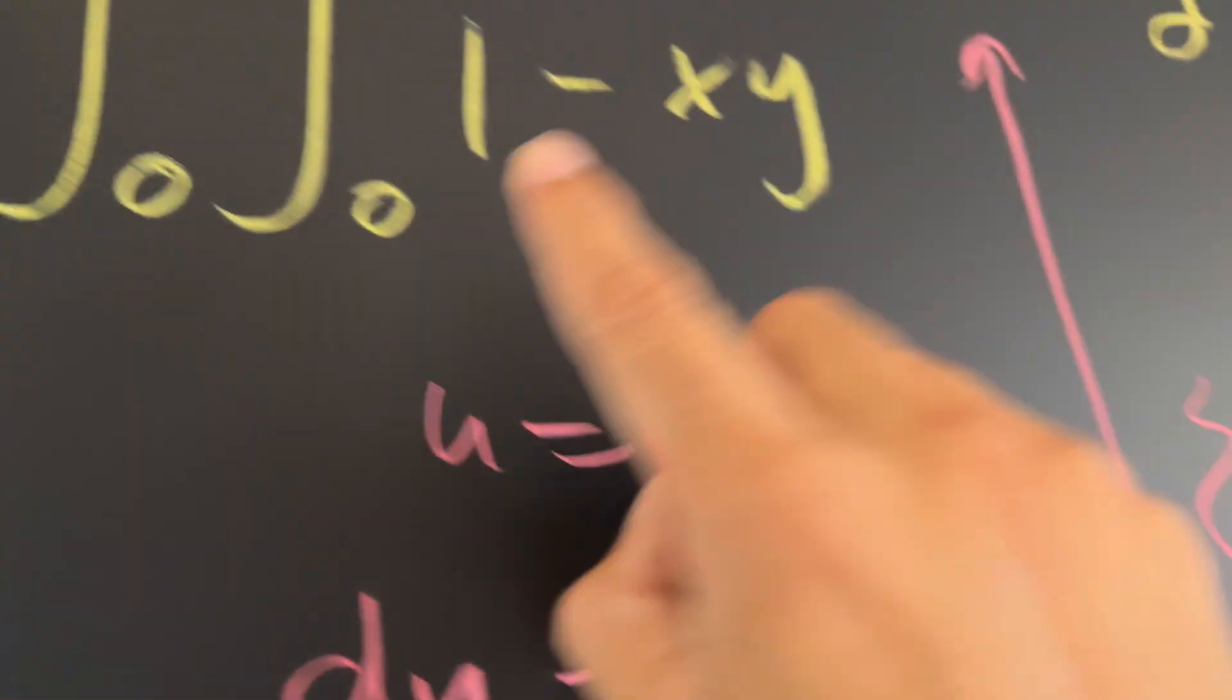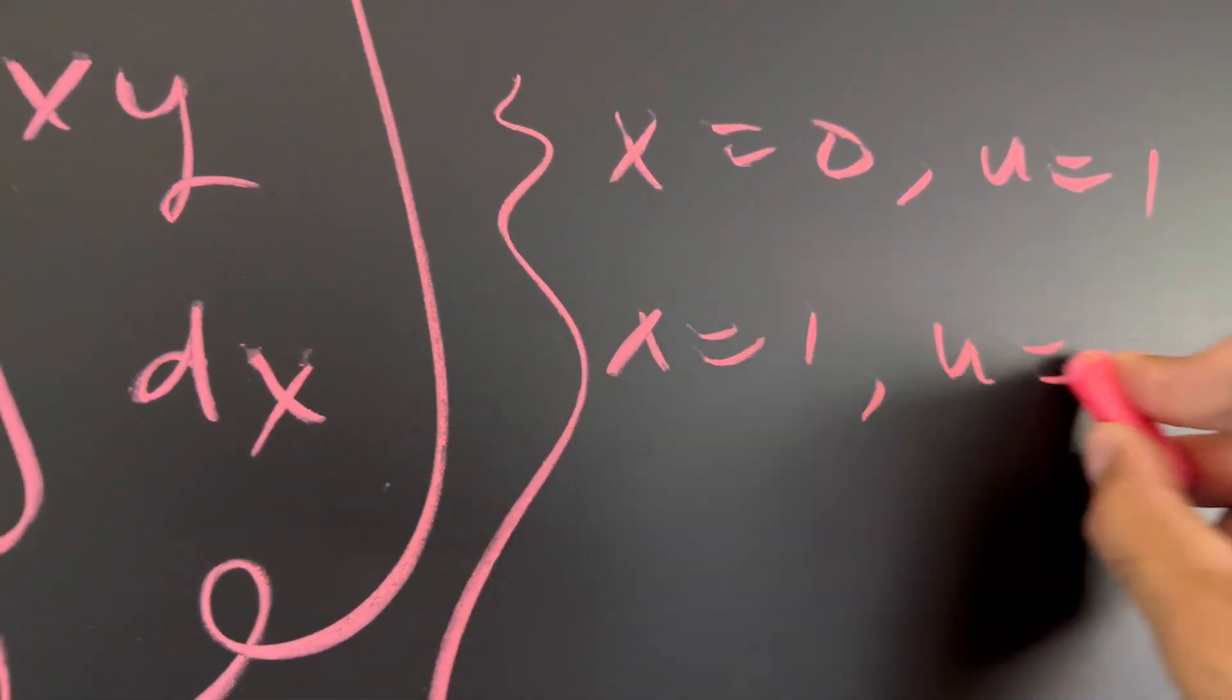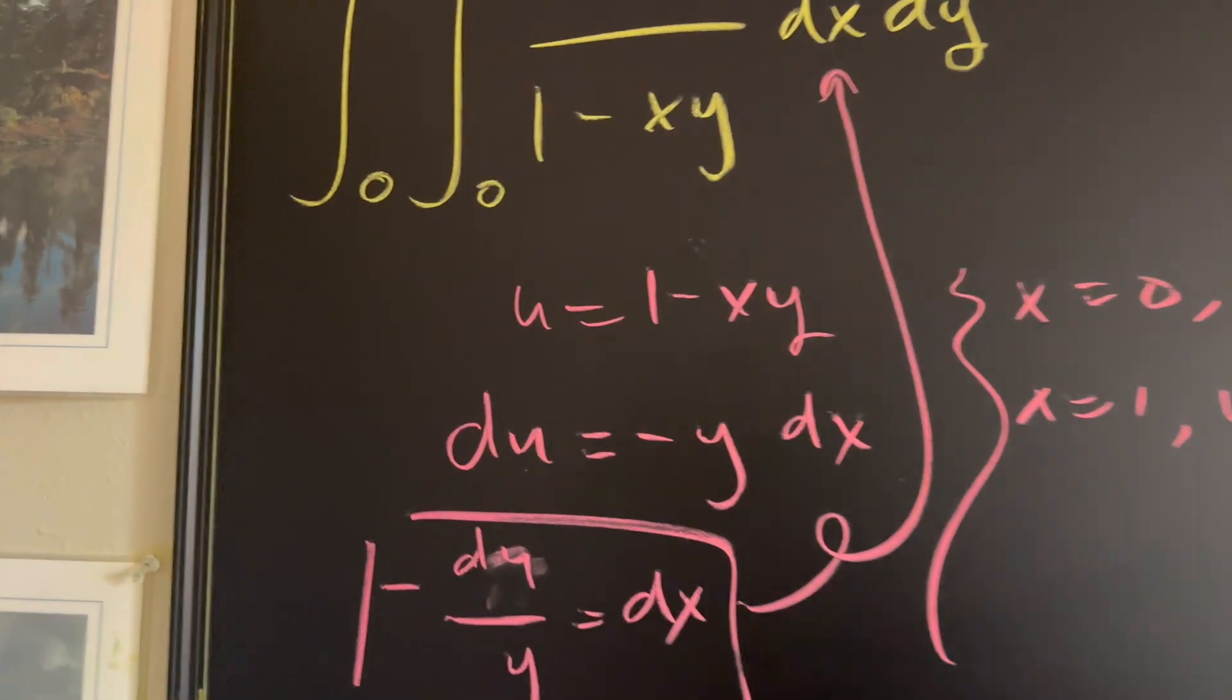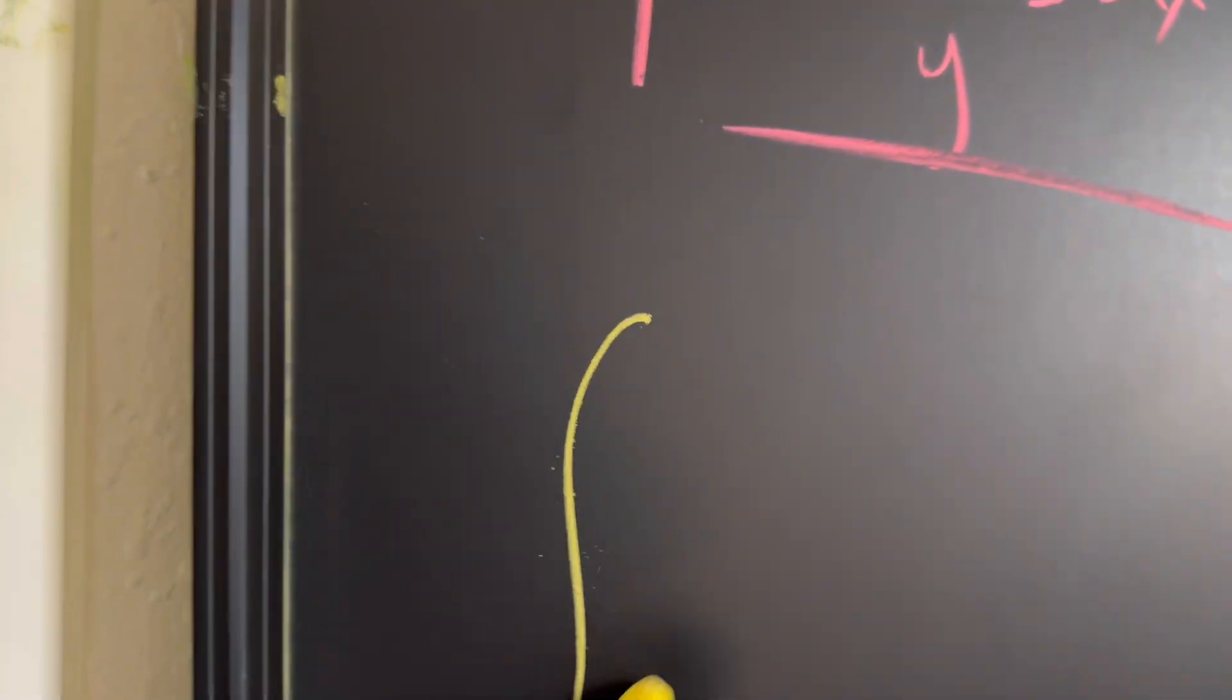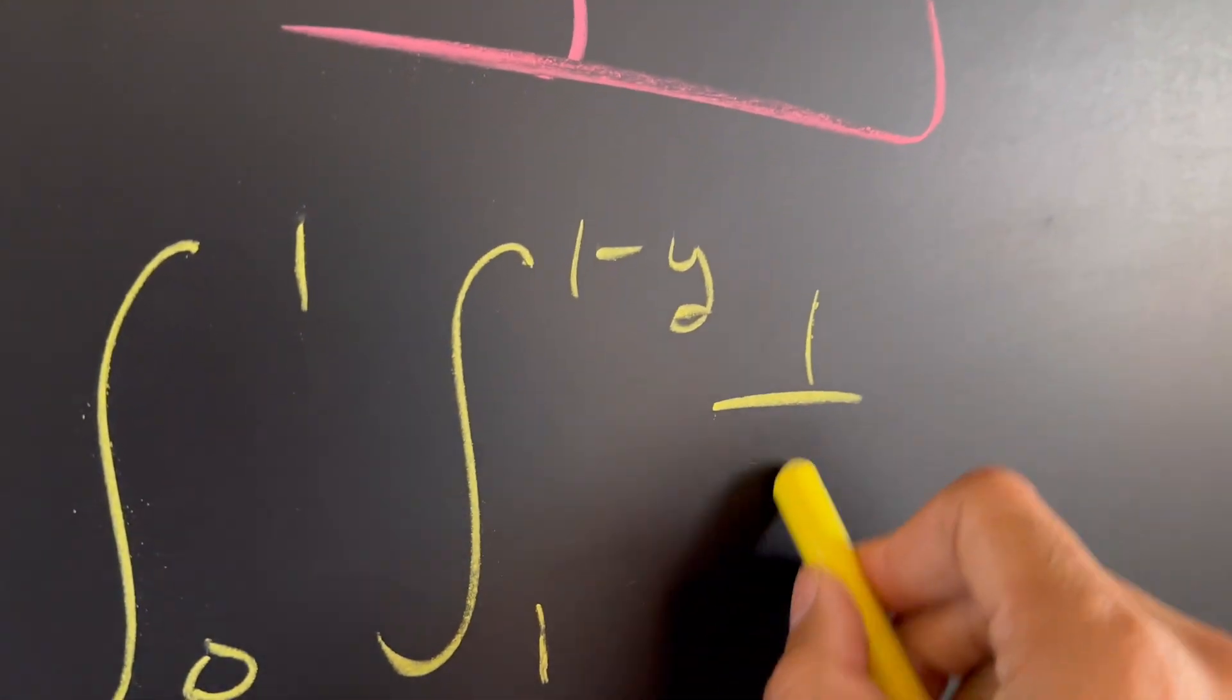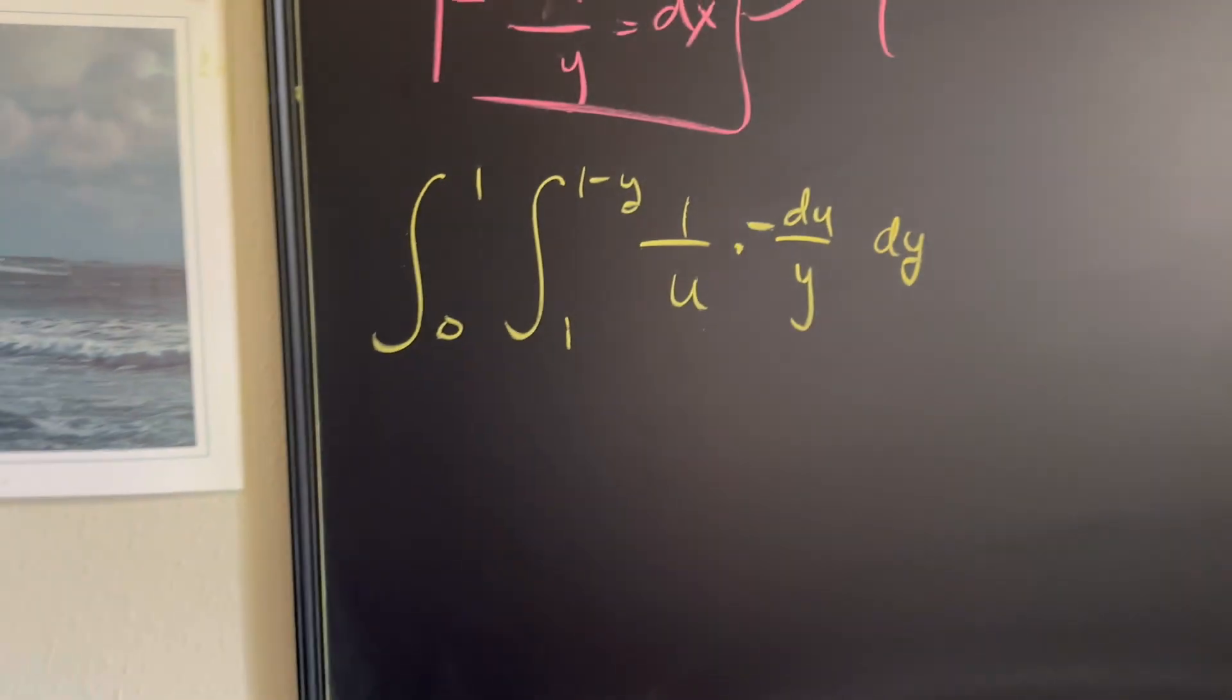Because when x is equal to zero, that's this bound right here, we're going to plug it in here. We're going to get that y or u is equal to 1. And then when x is equal to 1, well, u is going to be something a little different, which is going to be 1 minus y. So let's go ahead and now rewrite our double integral here. Well, we still have the first one over here from integral from zero to one, but then we're going to change the other. Now we're going to get the integral from 1 to 1 minus y, and then we're going to have 1 over u times our differential dx, which is this right here. Negative du over y, and then we still have with respect to y at the end.